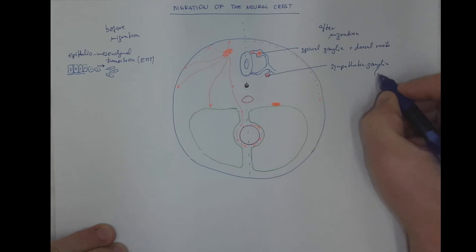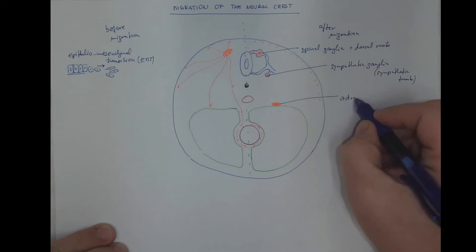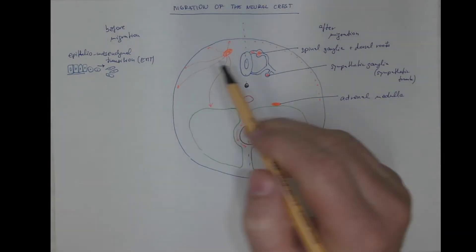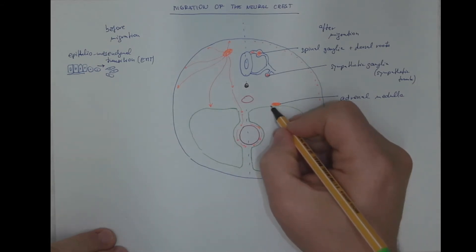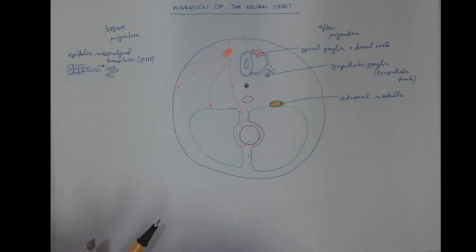Of the sympathetic trunk. Here is the adrenal medulla, not the adrenal cortex. The adrenal cortex, I will use a green color for that, is actually derived from the mesoderm of the celom. So only the adrenal medulla.